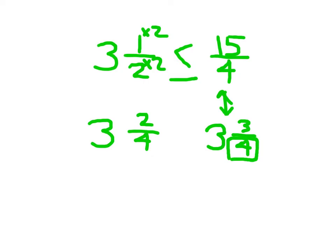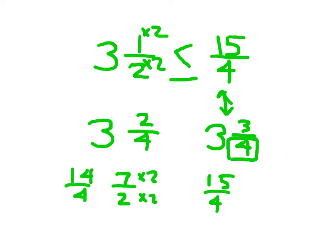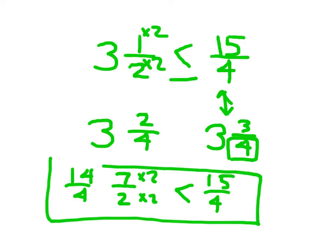3 and 1 half is less than 15 fourths. We just added one more step, where we had to have a common denominator in order to compare. If you're more comfortable converting 3 and 1 half to 7 halves and then finding that common denominator, that approach will work as well. Either approach will work just as long as you follow all the appropriate steps.